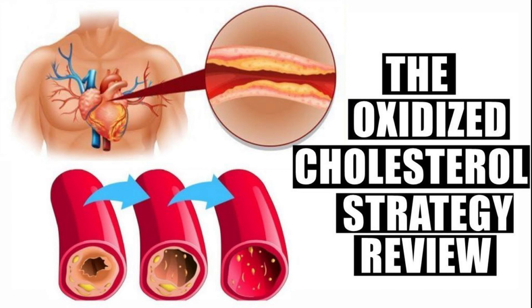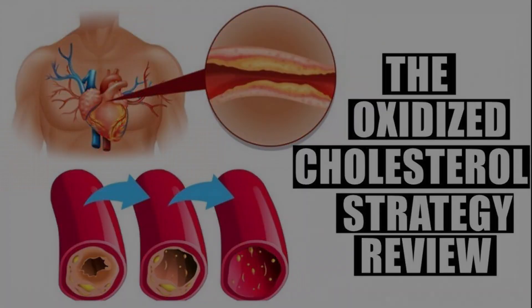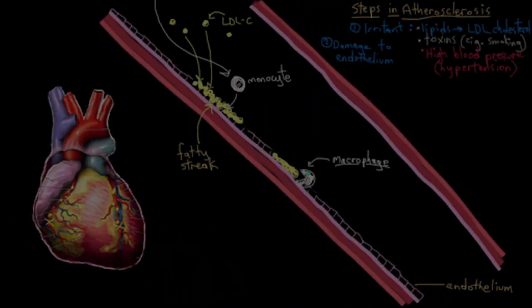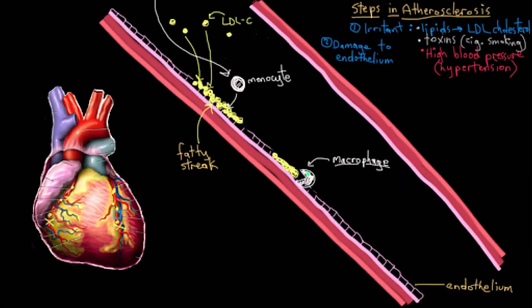What are the risk factors associated with oxidized cholesterol? There are three main ways oxidized cholesterol builds up in your bloodstream: eating commercially fried foods such as fried chicken and french fries, eating excess polyunsaturated fatty acids which are found in vegetable oils, and cigarette smoking.